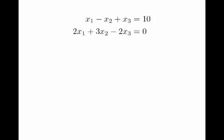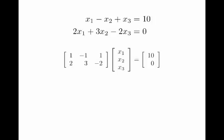Applying this to a larger linear system — here's a system with two equations and three unknowns. I can rewrite that as a matrix times a vector. On the left is the coefficient matrix: 1, negative 1, and 1 are the coefficients in the first equation; 2, 3, and negative 2 are the coefficients in the second equation. I'm multiplying that by the vector x1, x2, x3 that holds my unknowns, equaling the single vector 10, 0.